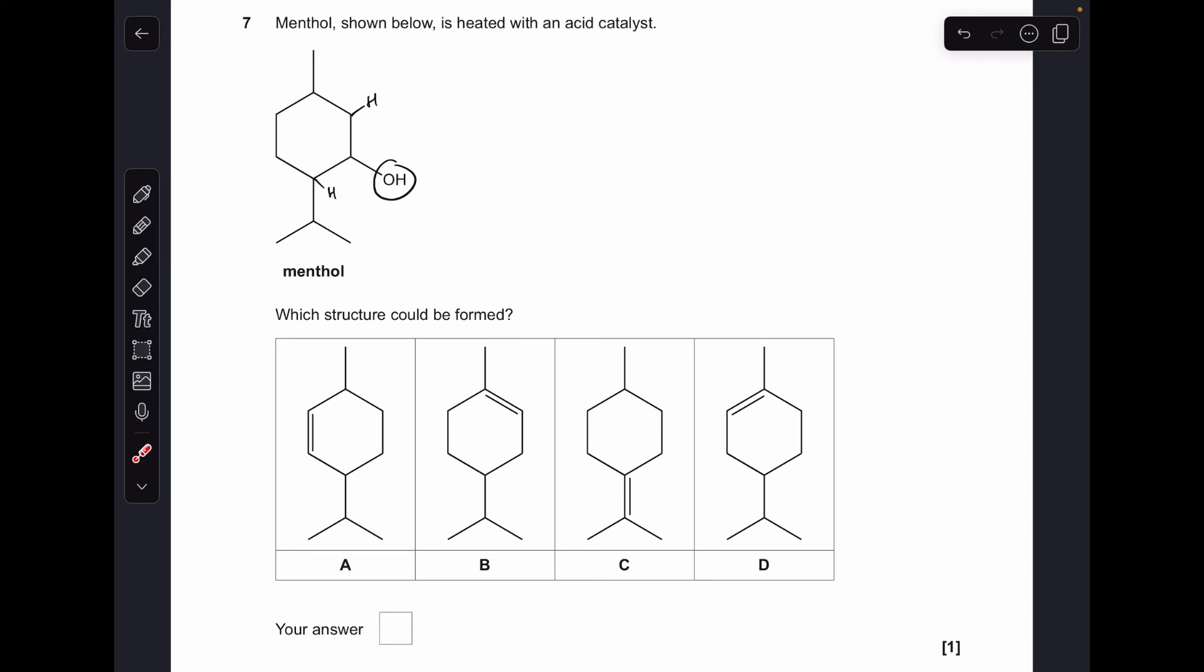Question seven. So menthol is an alcohol. And when it's heated with an acid catalyst, it's going to be dehydrated. So we're going to lose the OH group and a hydrogen from an adjacent carbon atom. I know there's two hydrogens there, but I'm just showing one for the purposes of the video. So a double bond could form here. And you can see we haven't got anything in here with a double bond in that position. We could also generate a double bond there. And there it is in A. So A was the answer.